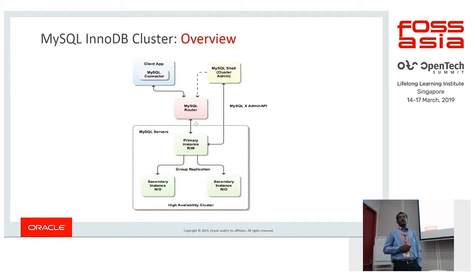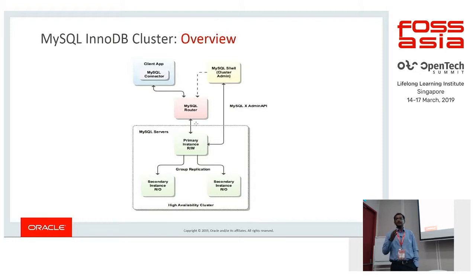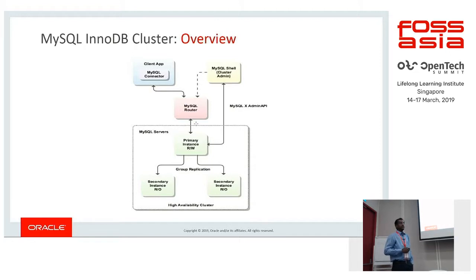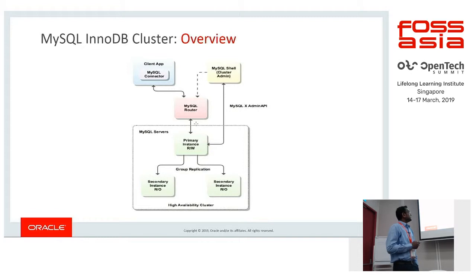MySQL Router is a lightweight middleware that provides transparent routing between the application and the servers. Getting the router configured is the easiest thing — you just need to say hyphen-hyphen bootstrap and the router is going to bootstrap. It has the capability to understand the number of instances present in the system and get them configured. You're going to see that in the demo. The next thing is MySQL Shell.